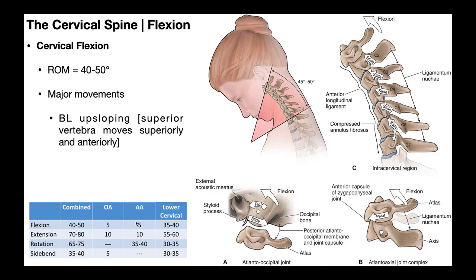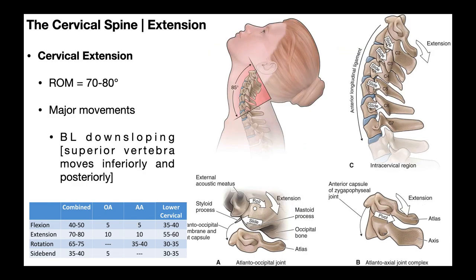Pretty much everything we just talked about is going to be the exact opposite in cervical extension. We imagine bending the head or neck backwards to look up at the ceiling — that's cervical extension. We have bilateral downsloping in extension, but we'll come back to that in a moment.